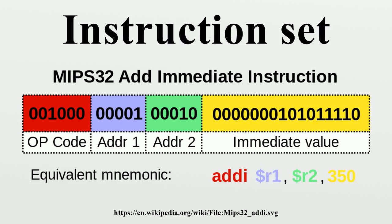Similarly, IBM Z architecture has a conditional store. A few instruction sets include a predicate field in every instruction; this is called branch predication.